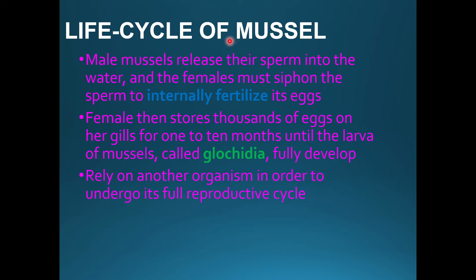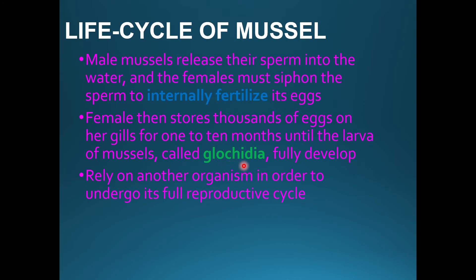The male mussel releases sperm into the water. Females siphon the sperm into their body and fertilize the eggs internally. They then store the eggs in their gills. After this period of up to ten months, the eggs are ready. They depend on another organism in order to undergo the full reproductive cycle.